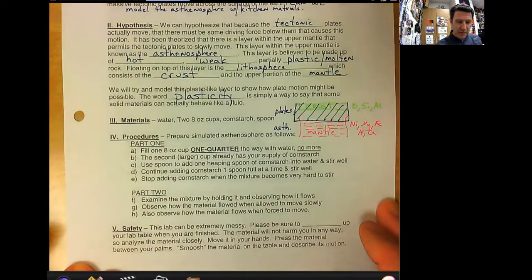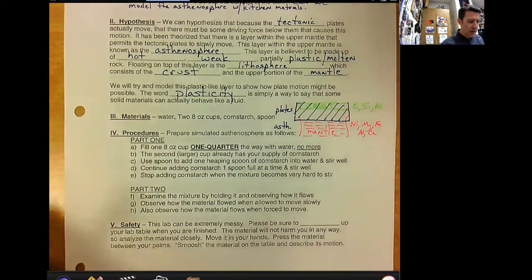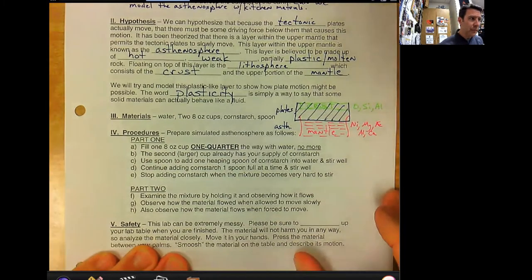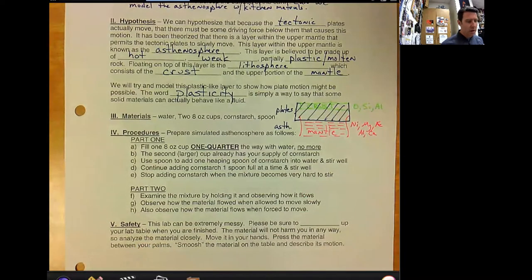Okay, plasticity is a way to say that some materials can actually behave like a fluid. So in the lab room, we're going to do this, and you can actually do this at home. Those of you at home, you need water, cornstarch, which is used in baking, and a spoon.